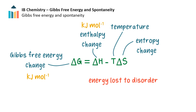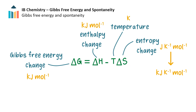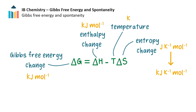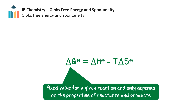The term T∆S is the energy lost to disorder in the system. Temperature is in Kelvin, and since the conventional unit of the change in entropy is joules per Kelvin per mole, we must remember to convert to kilojoules per Kelvin per mole in calculations. Delta G under non-standard conditions has a value which changes depending on the conditions and the amounts of reactants and products. Under standard conditions, it has a fixed value for a given reaction and only depends on the properties of the reactants and products.